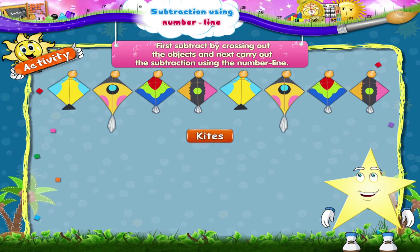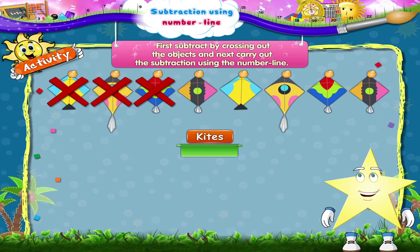First, we have the kites. One, two, three, four, five, six, seven, eight kites minus one, two, three kites. That's eight minus three equals one, two, three, four, five kites.